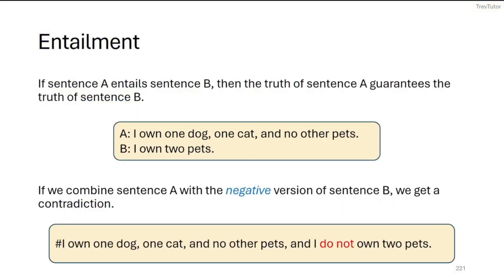And entailment is when one sentence guarantees the truth of another sentence. So you can think of, I might say a bunch of statements, and whatever entails from those statements is also true, just by default.